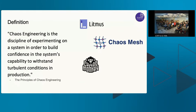In the CNCF ecosystem, there are also different chaos engineering projects specifically for Kubernetes — Litmus Chaos and Chaos Mesh — that people can use to implement more sophisticated chaos experiments, like changing resource requests to see what happens in different environments.